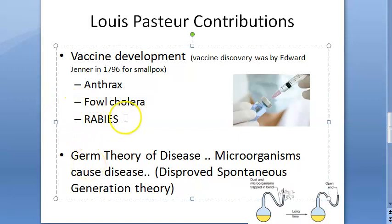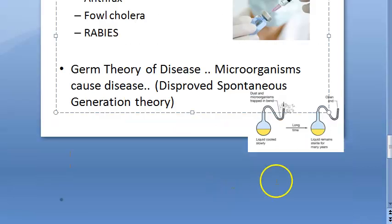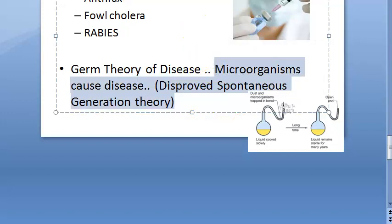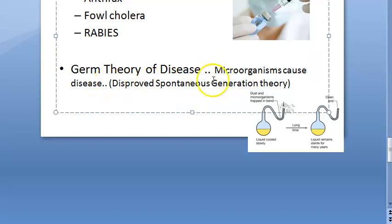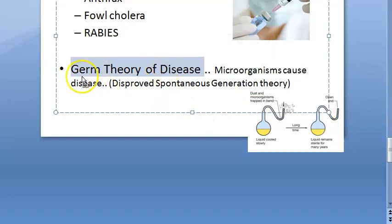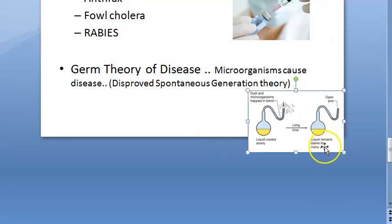Pasteur also proposed the germ theory of disease. He stated that microorganisms cause disease — not spontaneous generation, not sins or crimes. He disproved the spontaneous generation theory and demonstrated that germs cause disease. He also conducted the swan-neck flask experiment to prove the germ theory of disease.